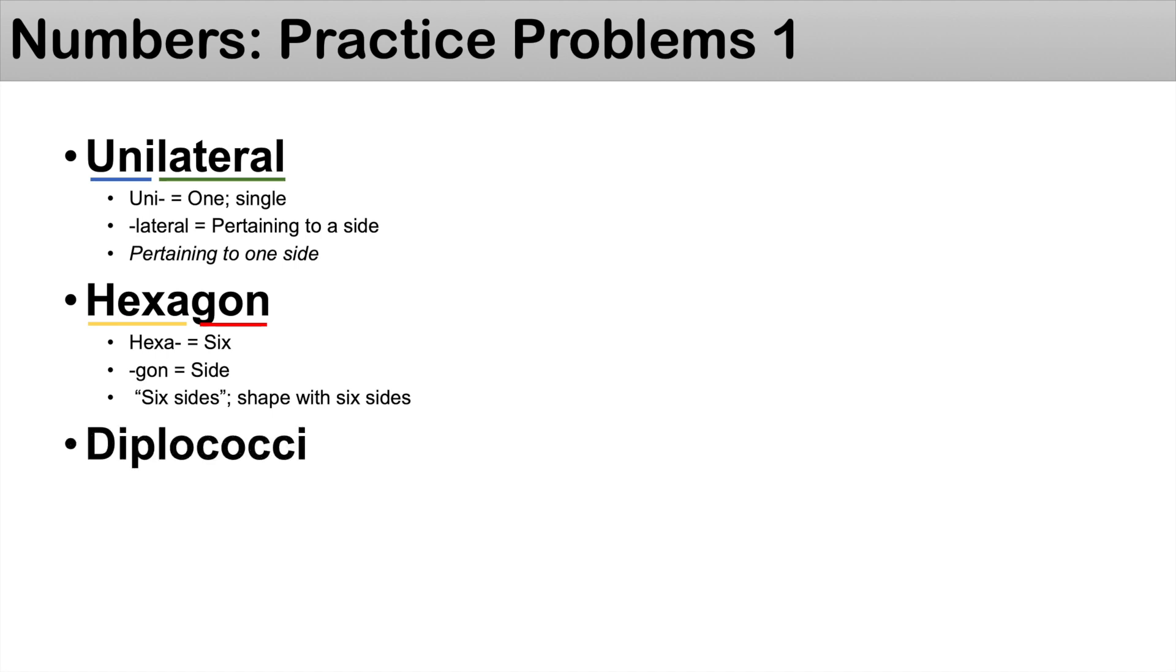The next one is diplococci. We break it down. Diplo, we've learned from this lesson, diplo means double. If you get tripped up with diplo, you can think of di. Di means two. So maybe that'll help you remember that diplo means double. And cocci is simply a suffix meaning the shape of a round shape or a spherical shape. So that really means double spheres, but it's actually a type of bacteria.